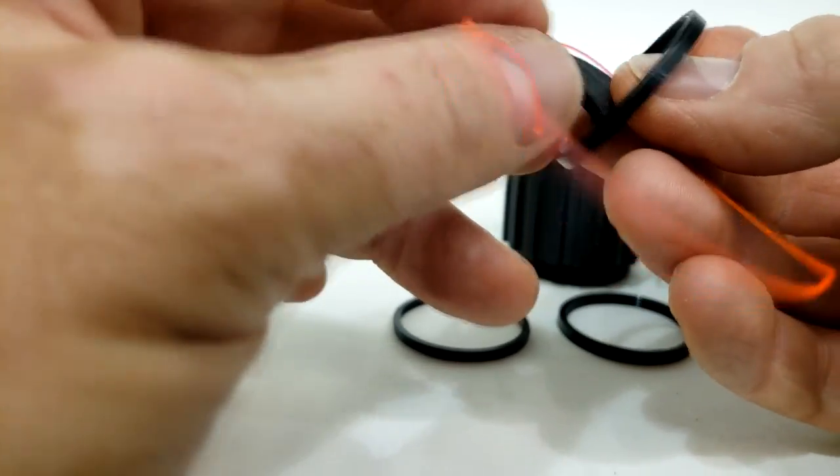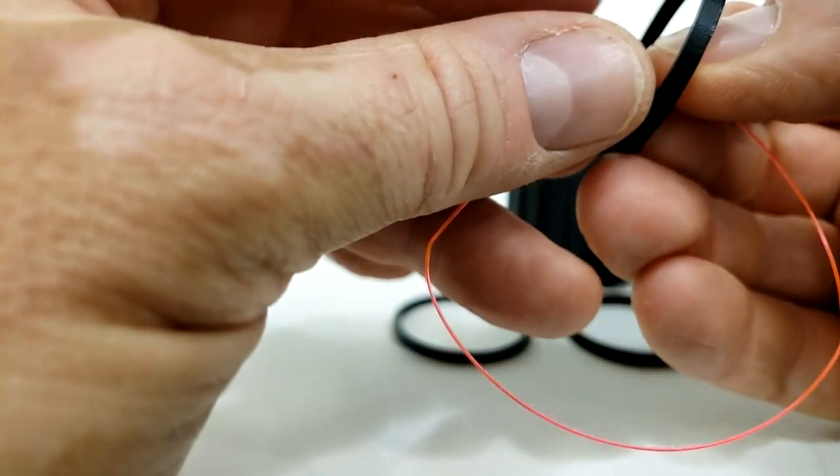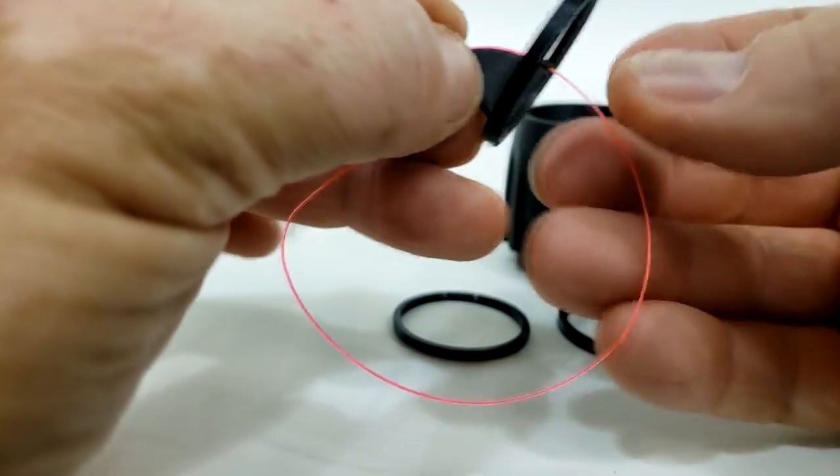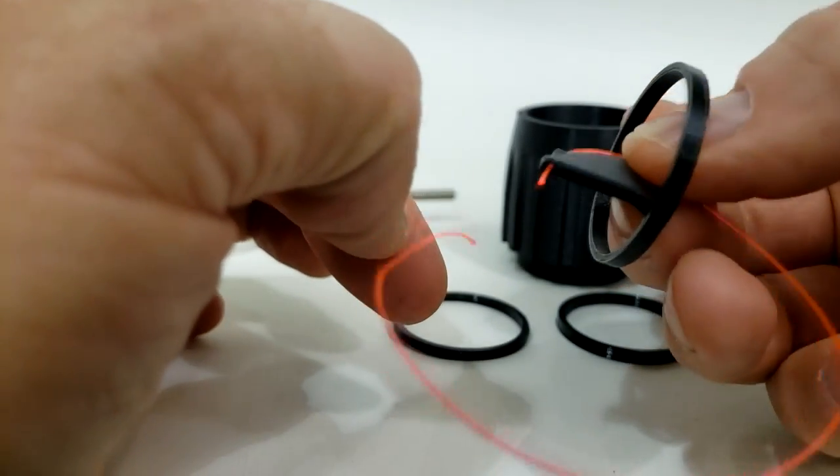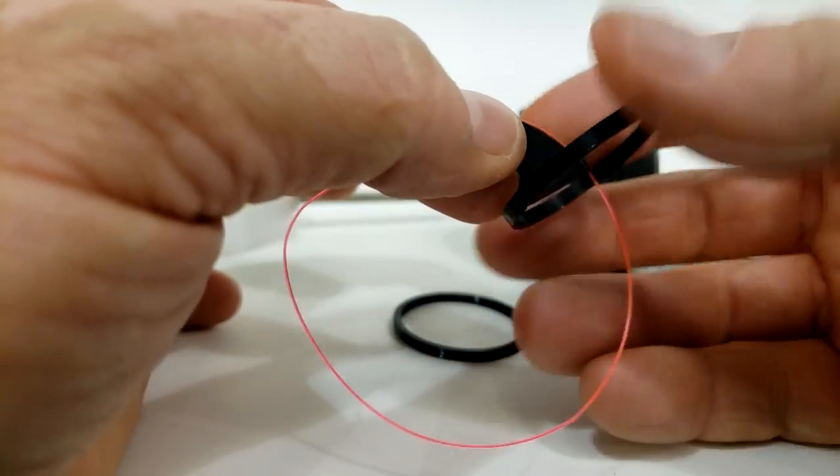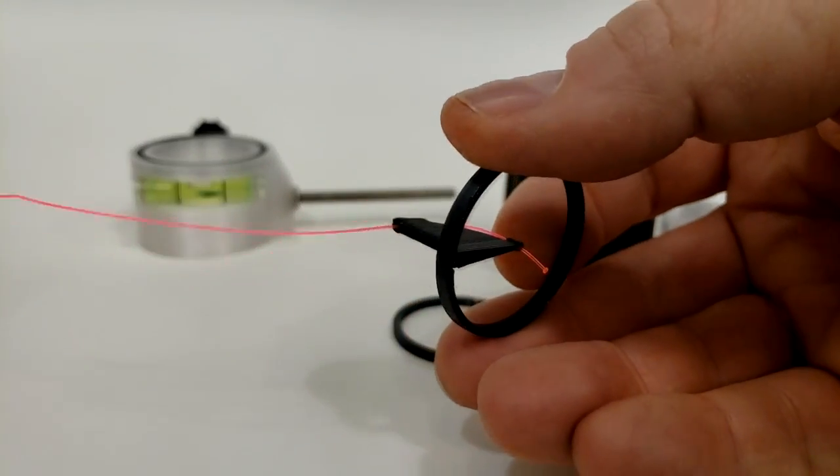If you put the fiber in between these little wings and kind of push up on it, it takes a little bit of dexterity and some good eyesight. Just like that, you'll get your fiber coming through the bottom.